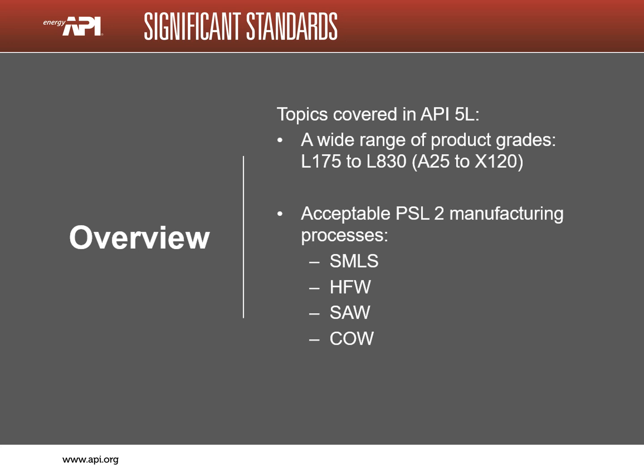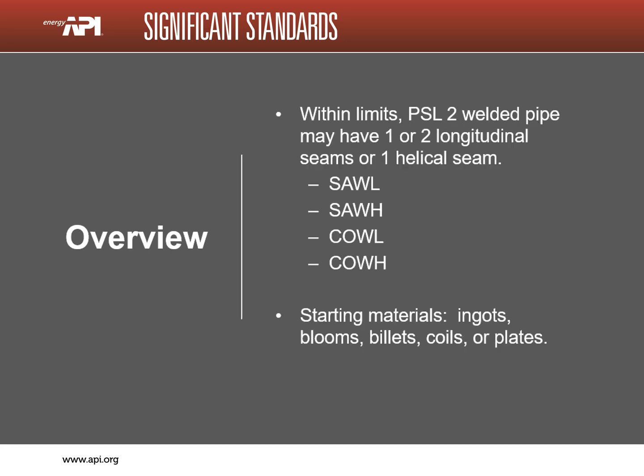Several manufacturing methods are covered. The only methods for PSL 2 are SMLS seamless pipe formed while hot with no weld, HFW high frequency welded pipe with no filler material, SAW submerged arc welded pipe with filler material, and COW combination welded pipe with filler material. Within limits, welded pipe may have one or two straight seams designated with the letter L, or one helical seam designated with the letter H. Note helical is often called spiral. Starting material is steel and may be billets, ingots, blooms, coils, or plates.